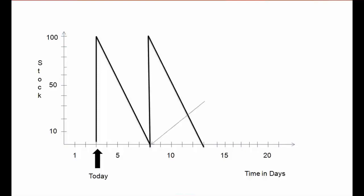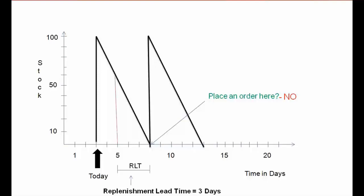The question is: should we place an order at the point when the stock is finishing? The answer is no. If you place an order on the day the stock is exhausted, it might take three or four days to get the stock delivered. So we need to place an order in advance — if delivery takes three days, we place an order three days before. This is known as the replenishment lead time (RLT).